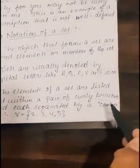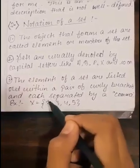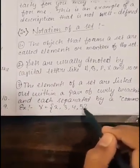The elements of a set are listed out within a pair of curly brackets and each separated by a comma. For example, X = {2, 3, 4, 5}.